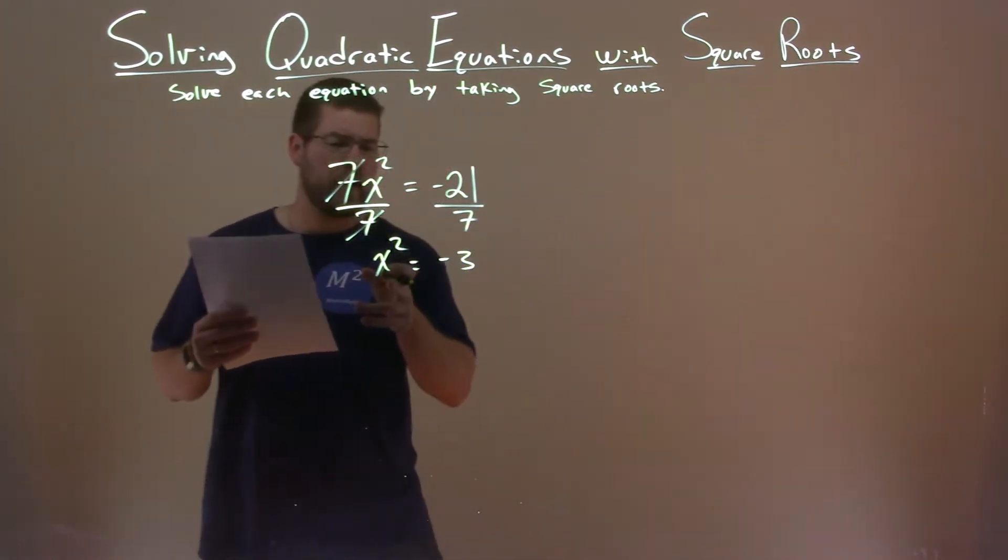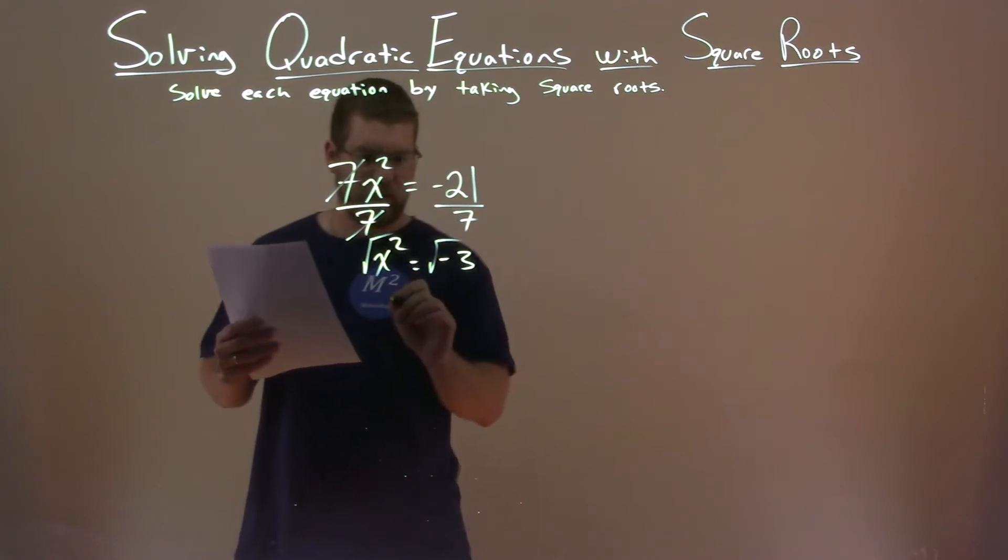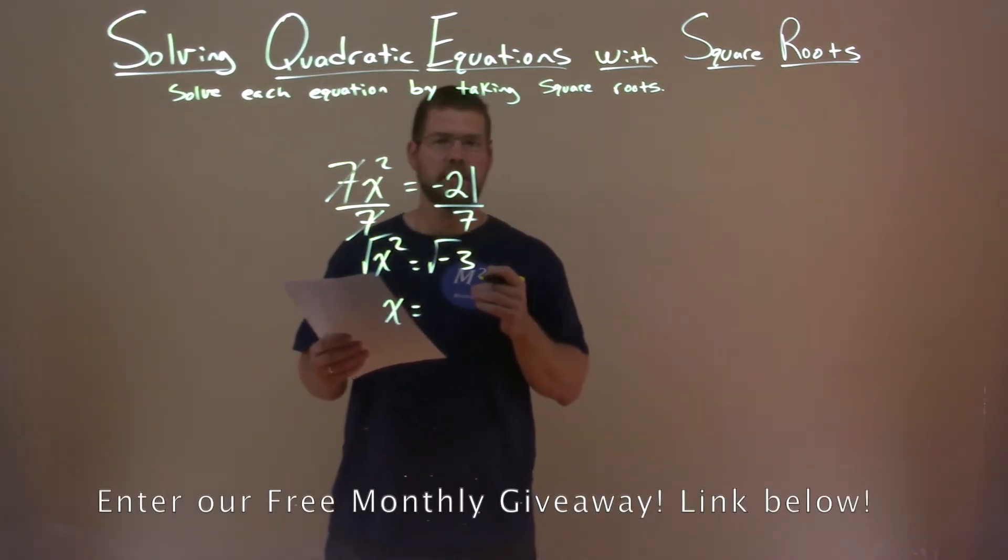So now we have x squared. We're going to take the square root of both sides to eliminate that squared value. So x is now by itself, and so what's the square root of negative 3?